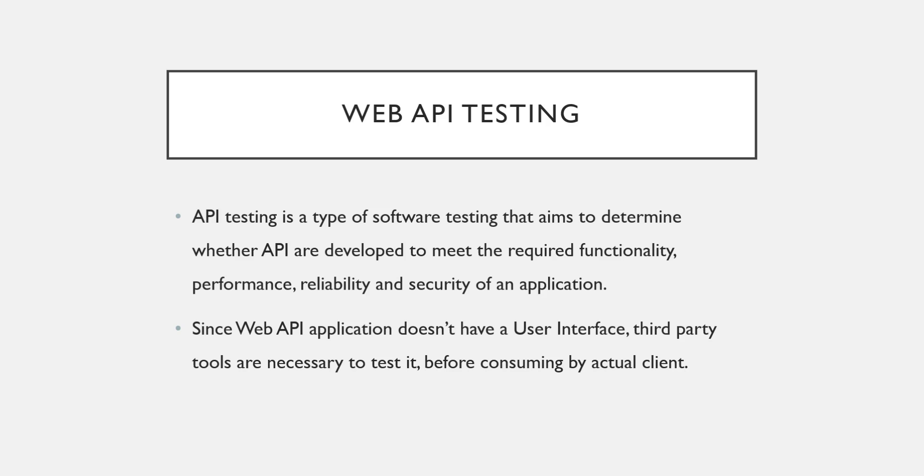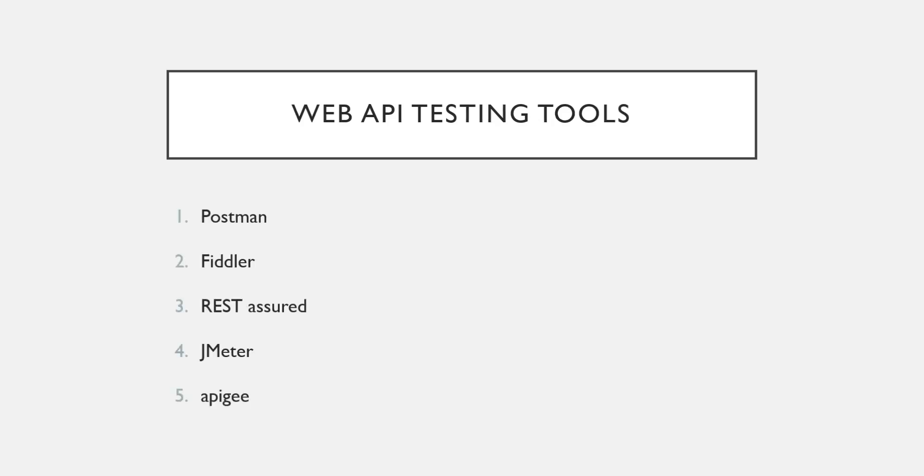We have to test a Web API thoroughly before it is consumed by any other client. The client of a Web API can be a web application, a mobile app, or any IoT device, so we must thoroughly test it before those applications consume it.